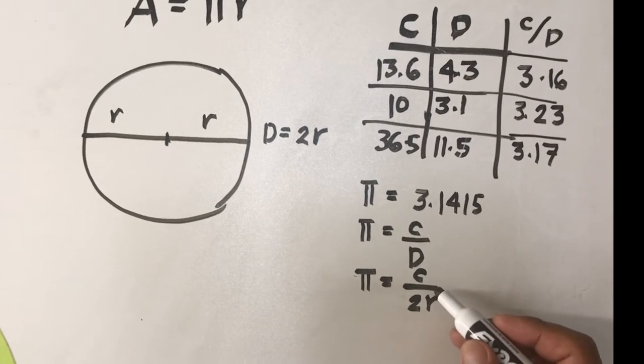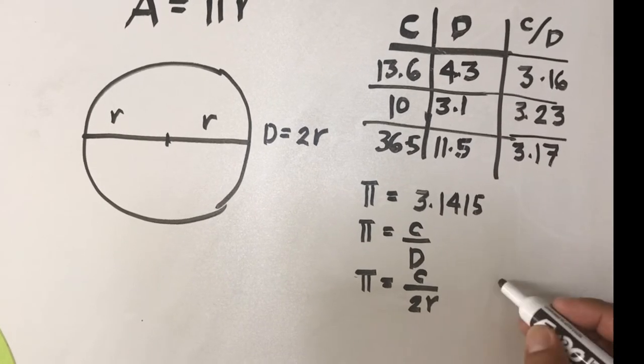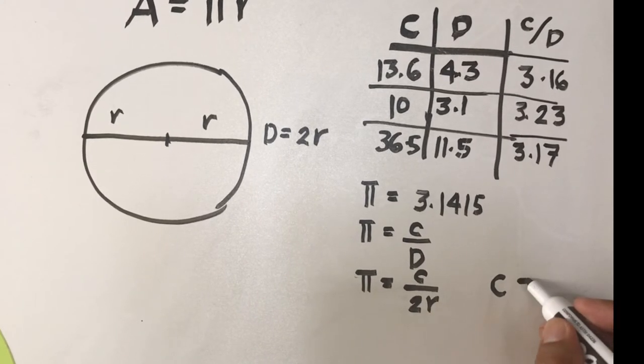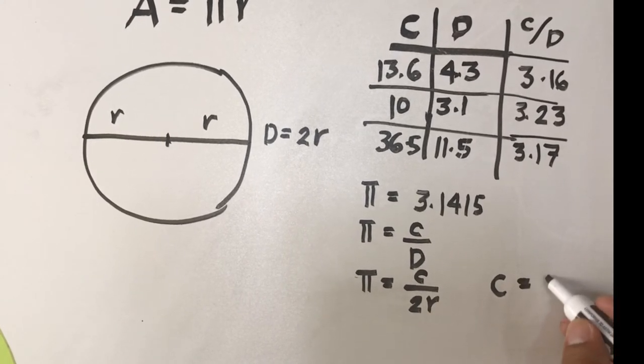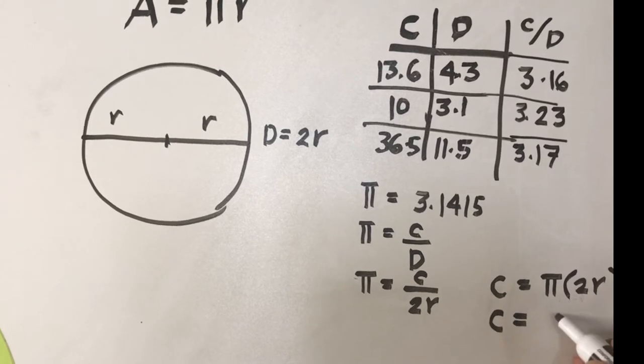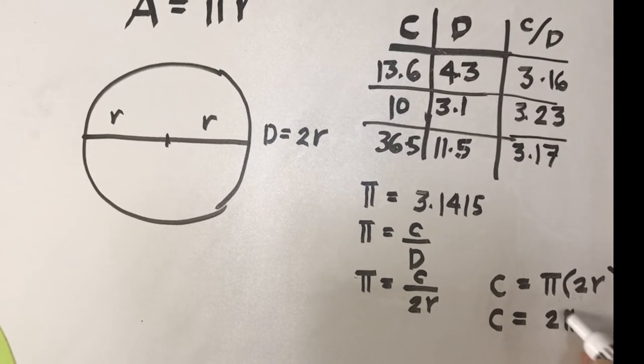So from here we can solve for C by multiplying π and 2r, so we have C equals π times 2r, which we can rewrite as C equals 2πr.